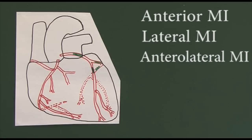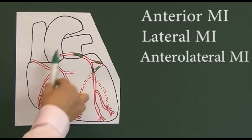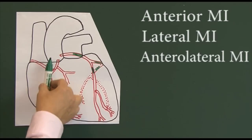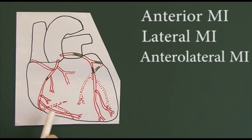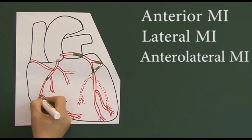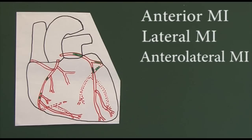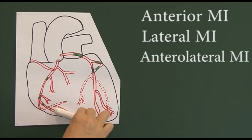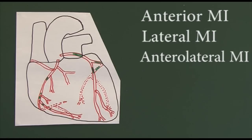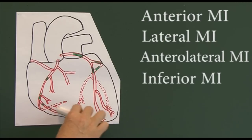Likewise, if there's an infarction in the right coronary artery, since it goes down the right side we would expect a right-sided infarction. But more commonly, thrombus causes infarction in the lower parts of the right coronary artery, which is supplying largely the bottom part of the heart — so infarction in the right coronary artery often causes what we call inferior myocardial infarctions.